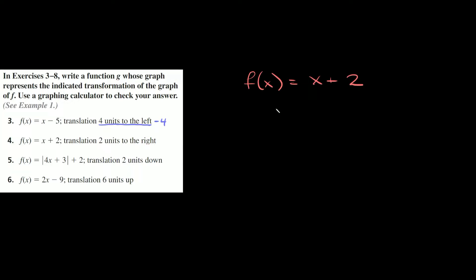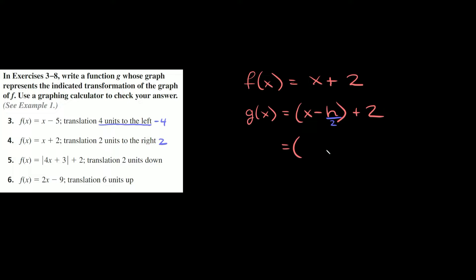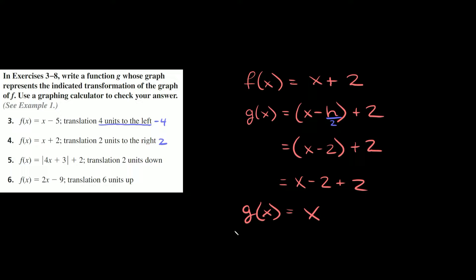Next one is f of x is equal to x plus two — already wrote it right there — and translate it two units to the right. Two units to the right would be a positive two. So the first step is rewriting our x as x minus h, so g of x equals x minus h, and then we have plus two on the outside. h in this case is positive two, so we have x minus two plus two, which is equal to just x. So g of x is equal to just x.